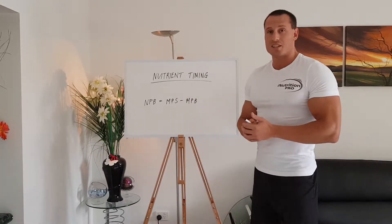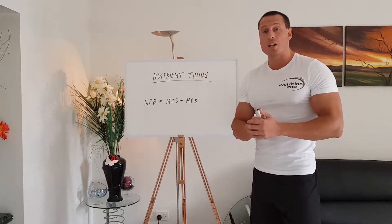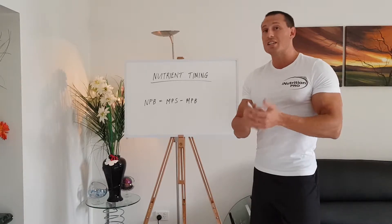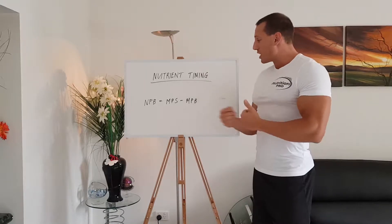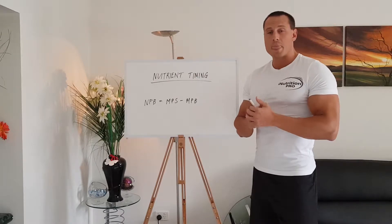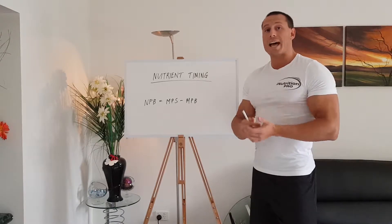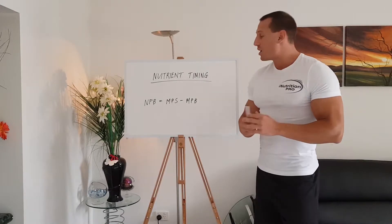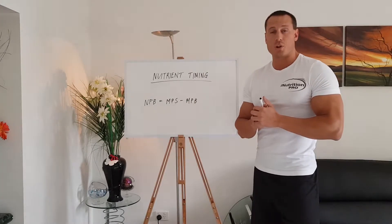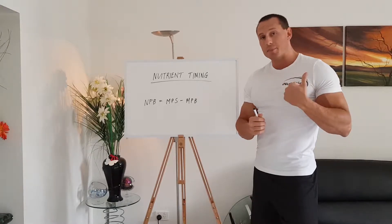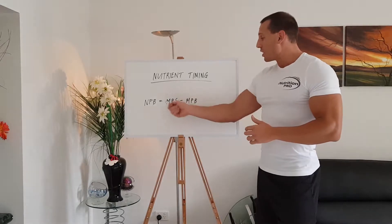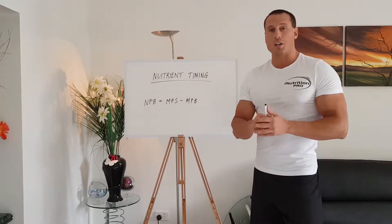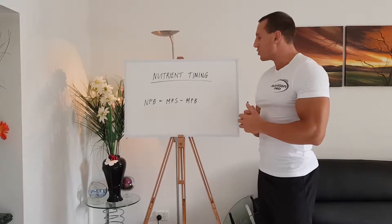Muscle protein synthesis is specifically stimulated when we ingest amino acids. Amino acids are derived from protein, and specifically the essential amino acids, when ingested, will trigger an increase in muscle protein synthesis. Because of that, protein is anabolic in that it triggers muscle protein synthesis. Carbohydrates and fats do not cause an increase in muscle protein synthesis, so carbs and fats are not anabolic — only protein is the anabolic macronutrient.